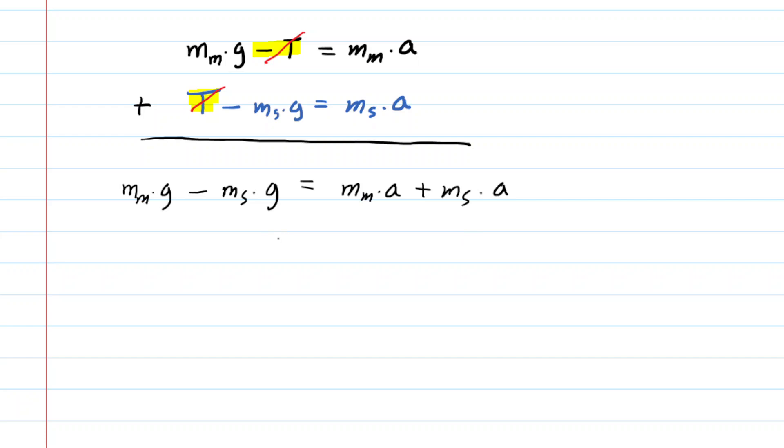Now we can clean this equation up a little bit by noticing common factors. So for example, we have g in each term on the left-hand side. So we can factor out g. This leaves us with the mass of the man minus the mass of the sandbag. On the right-hand side, we have a common factor of acceleration a. So we're going to factor that out as well.